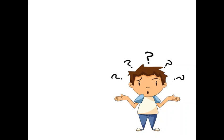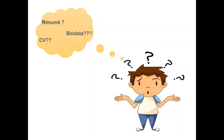You can see this confused boy here — confused about what to call the document containing all the information about one's career, whether it is resume, CV, or bio data. You can see the two accent marks on both the e's in 'résumé,' and that is why it is pronounced 'ray-zoo-may.' It's a French word, and those accent marks suggest that the e's are pronounced as 'ay.' So: 'résumé.' CV is curriculum vitae, and bio data we all know.